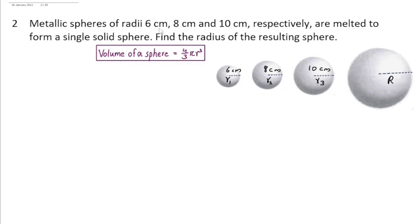Metallic spheres of radii 6 cm, 8 cm and 10 cm respectively are melted to form a single solid sphere. Find the radius of the resulting sphere.